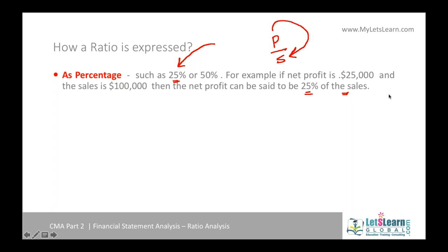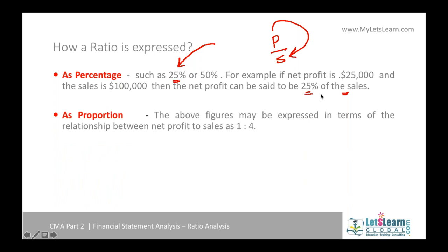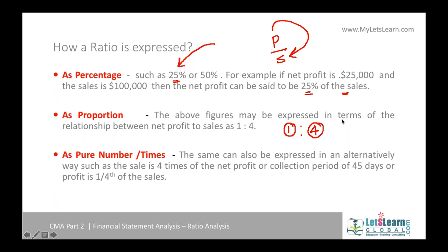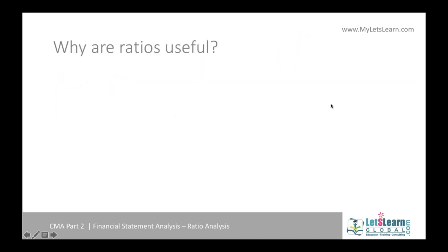A ratio can be expressed as a proportion, like one is to four — for example, current assets are one-fourth of total assets. It can also be expressed as a pure number like one-fourth, in times such as four times or five times, or in a time period like 30 days, 40 days, or 45 days.